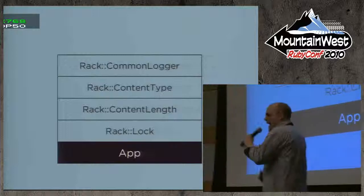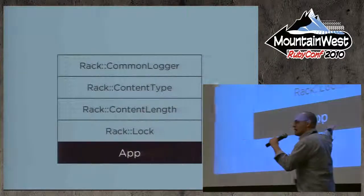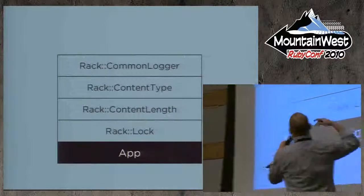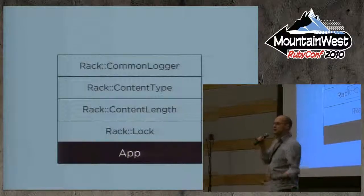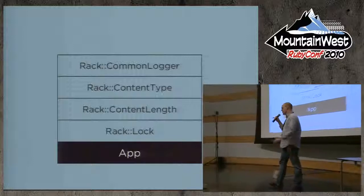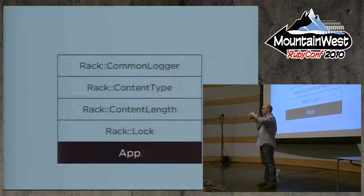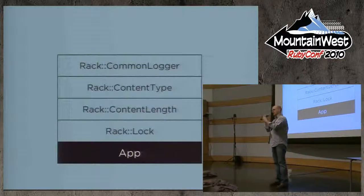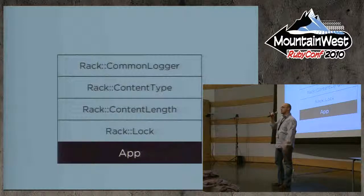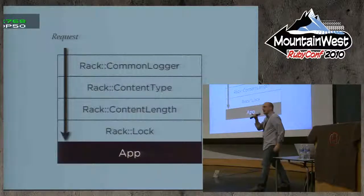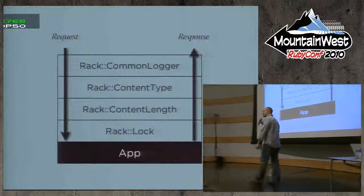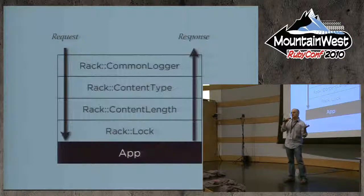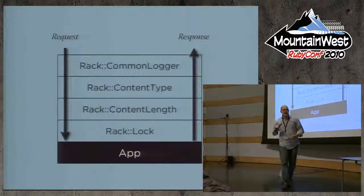For example, Common Logger: if you're running a PHP app on Apache, Apache writes out log files. But sometimes you want a log of just the stuff that actually hits your app, not requests for static files. So you insert Common Logger into the pipeline. As the request comes in it hits Common Logger, which doesn't do anything until the response comes back out. Then it looks at the status, the time, the user agent, and makes an Apache-style log.